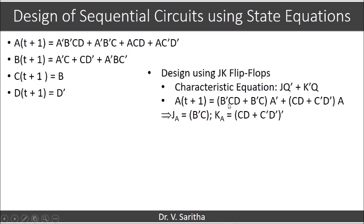Here we are simplifying this into B'C. So, JA is B'C and this is KA'. So, KA is (CD + C'D')'.